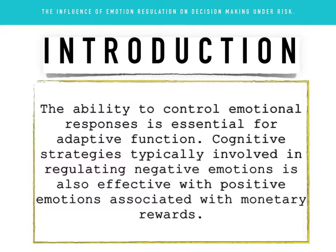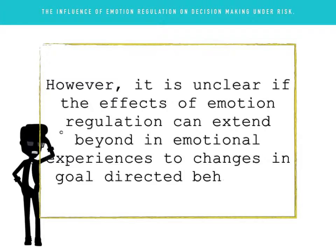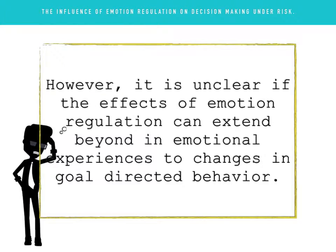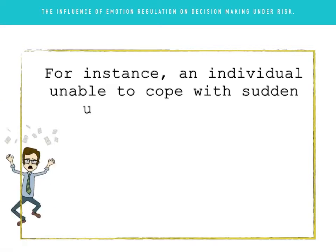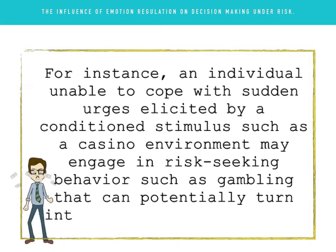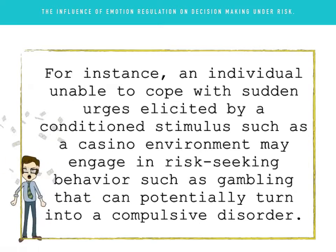The researchers explained that the ability to control emotional responses is essential for adaptive function. A cognitive strategy typically involved in regulating negative emotions is also effective with positive emotions associated with monetary rewards. However, it is unclear if the effects of emotion regulation can affect beyond emotional experiences to changes in goal-directed behavior. For instance, an individual unable to cope with sudden urges elicited by a conditioned stimulus such as a casino environment may engage in risk-seeking behavior such as gambling that can potentially turn into a compulsive disorder.